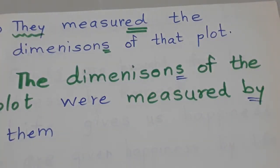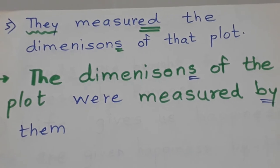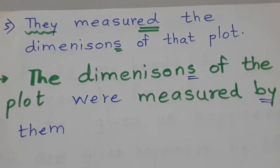They measured the dimensions of that plot. Measured means to measure. Dimensions of that plot - all the dimensions of that place were measured. So the answer: The dimensions of the plot were measured by them.